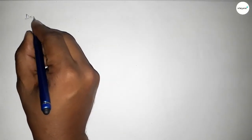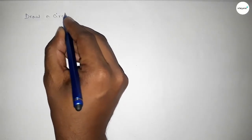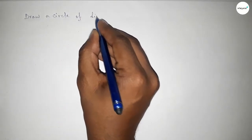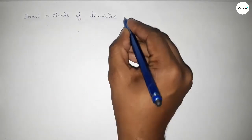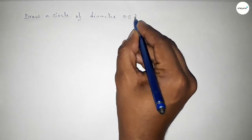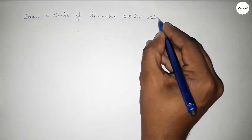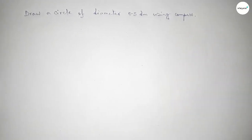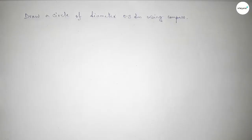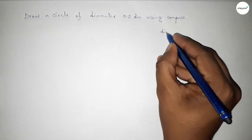Hi everyone, welcome to SI Chair Classes. Today we will draw a circle of diameter 0.5 decimeter using a compass in an easy way. First, the diameter is equal to 0.5 decimeter.